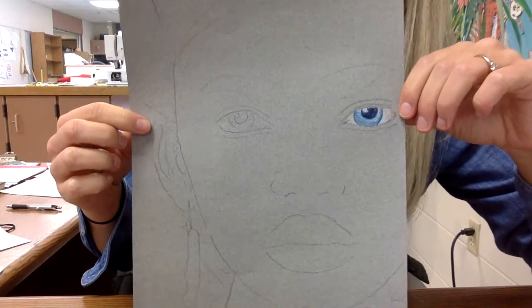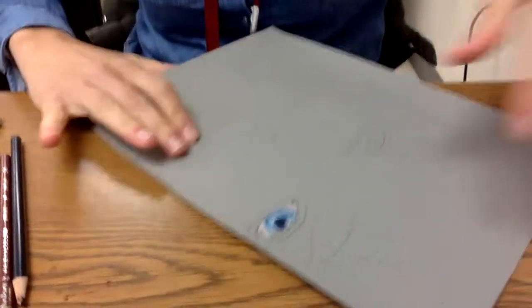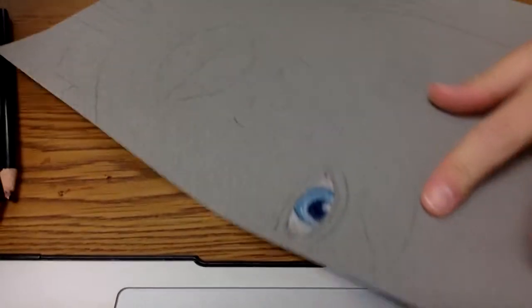You can see on the eye you've got the white of the eye and then the colored portion. Now I'm going to start going out and talking about the skin tones.